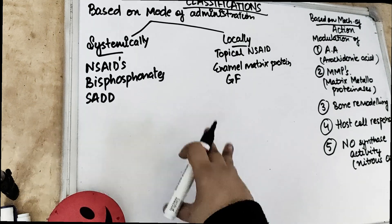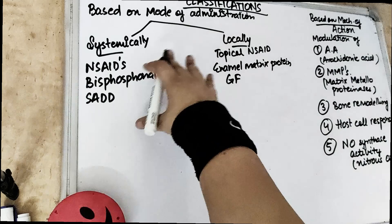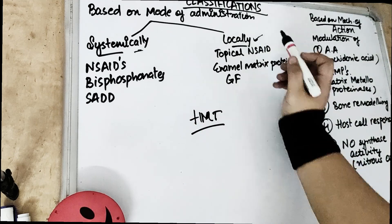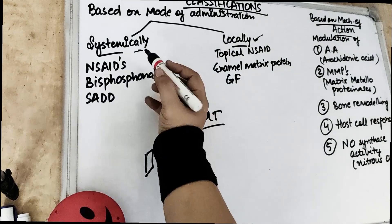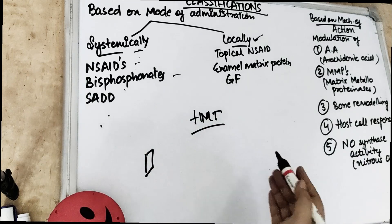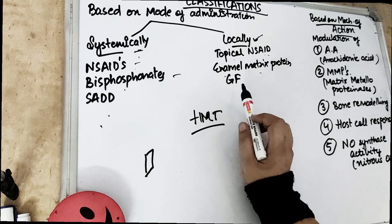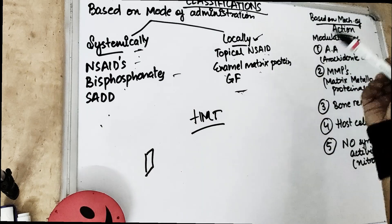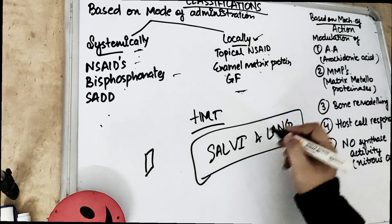The classification of host modulating agents can be given in two ways: systemic (tablet form) or locally at the site of periodontal destruction. Systemically, we give NSAIDs, bisphosphonates, and sub-antimicrobial dose doxycycline. Locally, we give local NSAIDs, enamel matrix proteins, bone morphogenetic proteins (BMPs), and growth factors. This classification was given by Salvi and Lang in 2005.